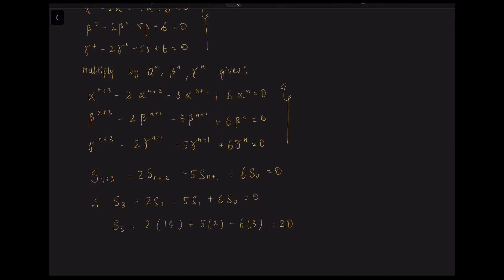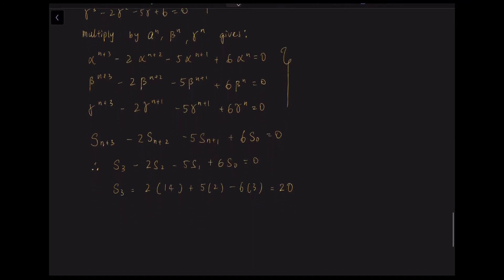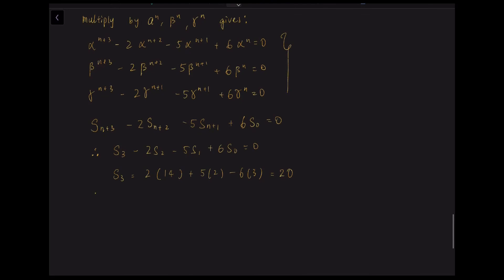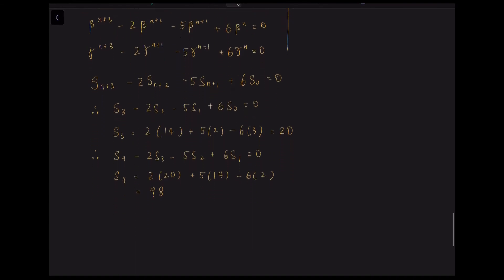To solve for S₄, we let n=1: S₄ − 2S₃ − 5S₂ + 6S₁ = 0. Rearranging and substituting S₃=20, S₂=14, and S₁=2, we get S₄ = 98.